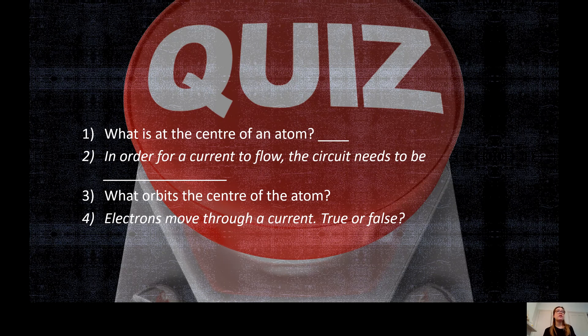Question two in order for a current to flow the circuit needs to be open or closed? In order for a current to flow the circuit needs to be open or closed?